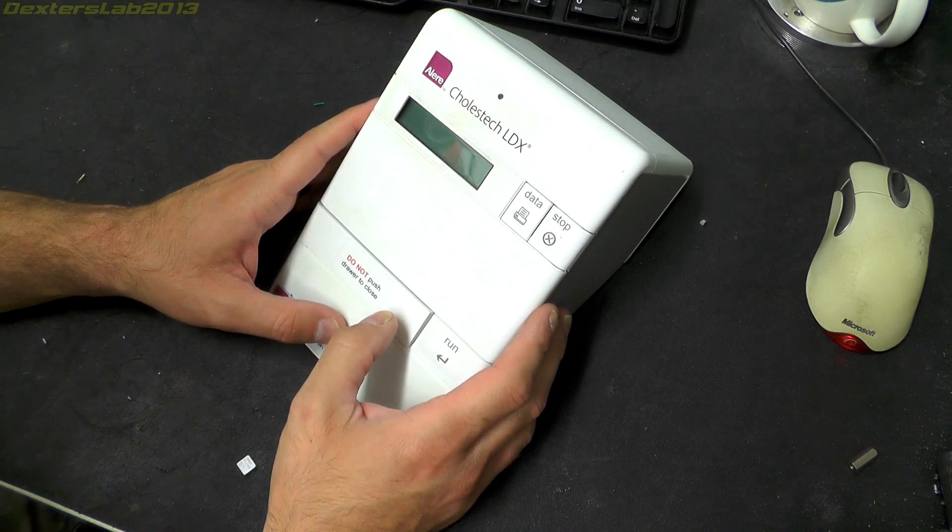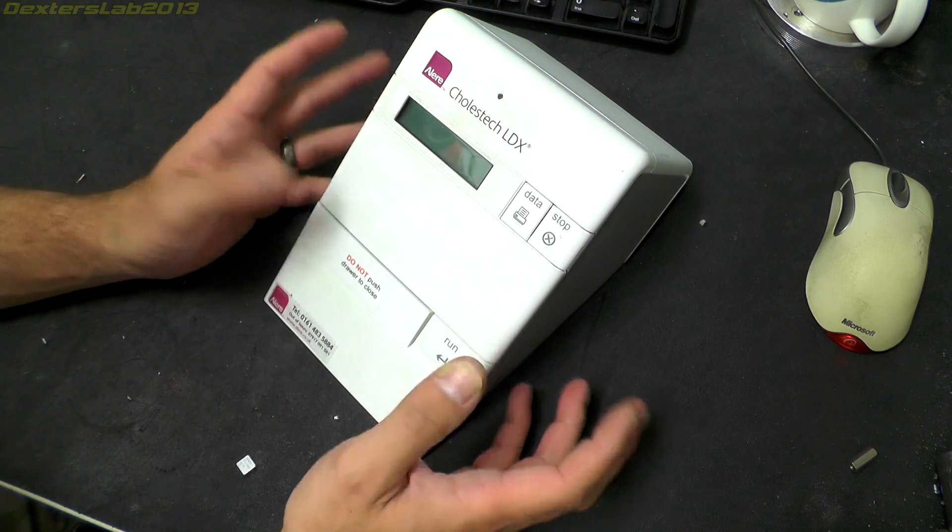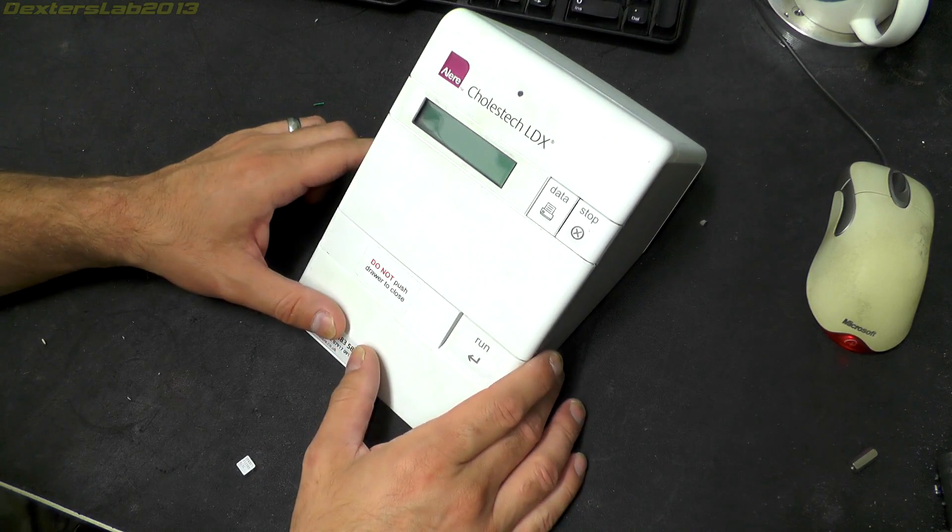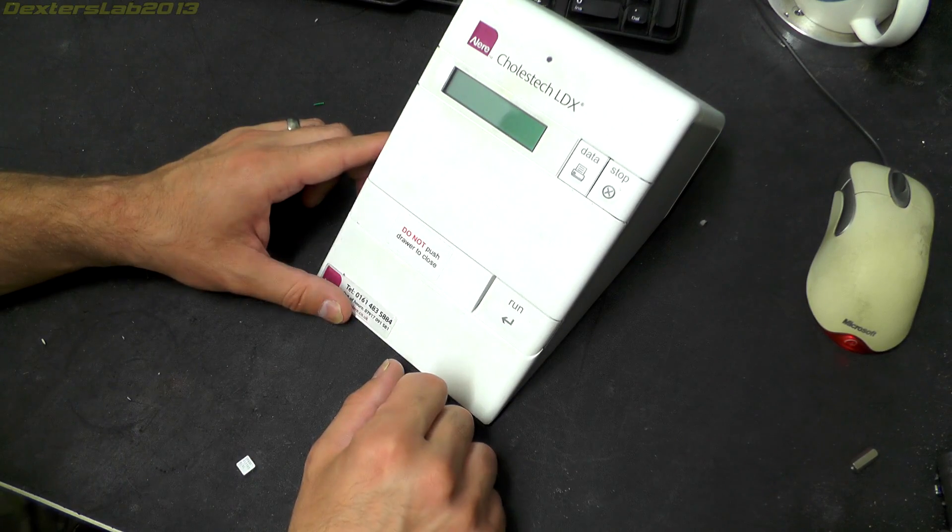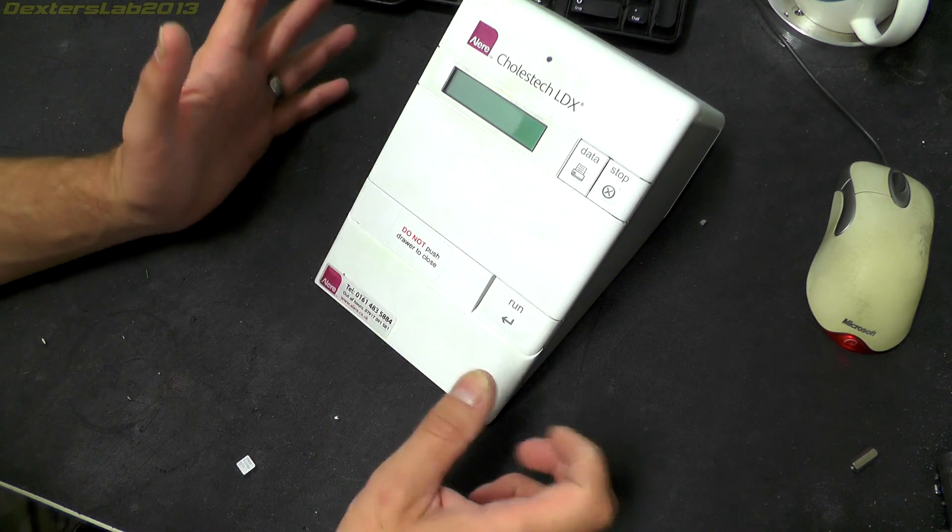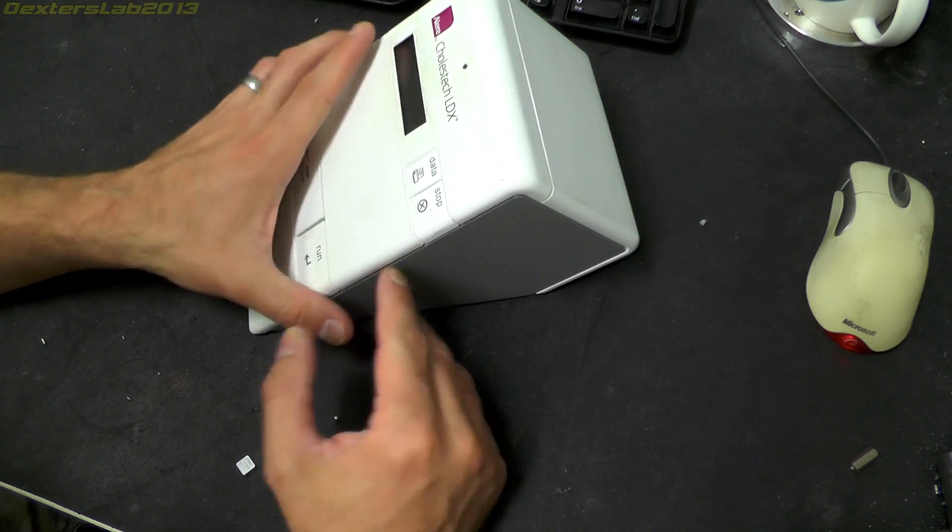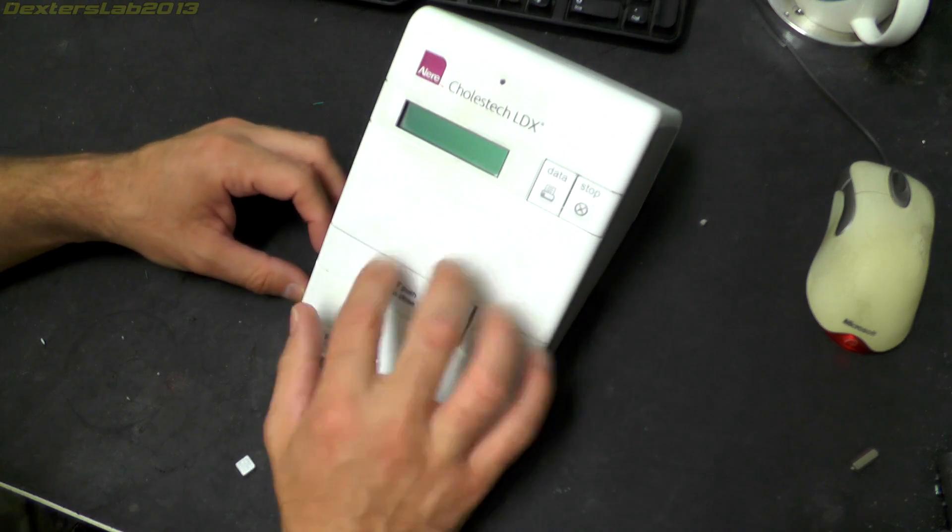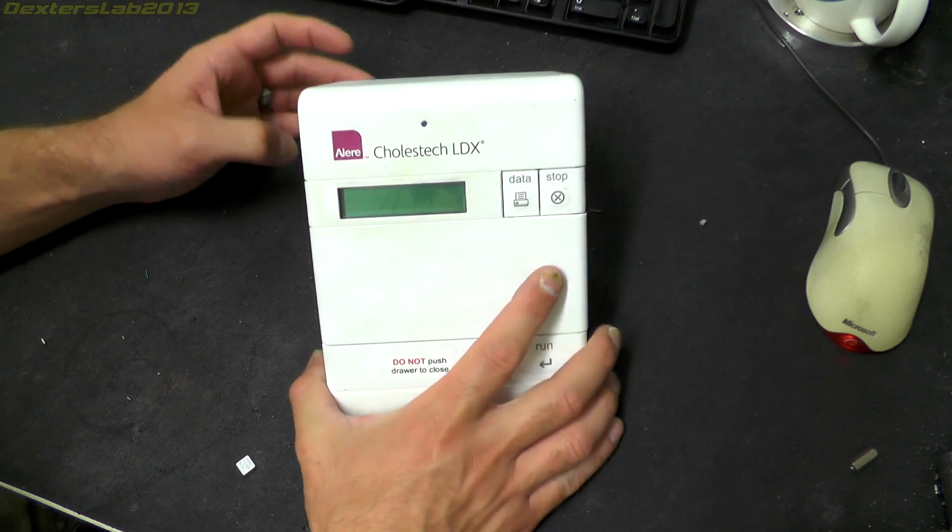What we have here is an Allaire Cholestek LDX, a cholesterol testing machine. You prick your finger with a little device and drop the blood into a small cartridge that goes in the front here. It does some kind of analysis and works out your cholesterol levels. Unfortunately, this doesn't work, otherwise I would show you it working or at least turning on. I don't have any of the cartridges, so I wouldn't actually be able to do a test anyway.